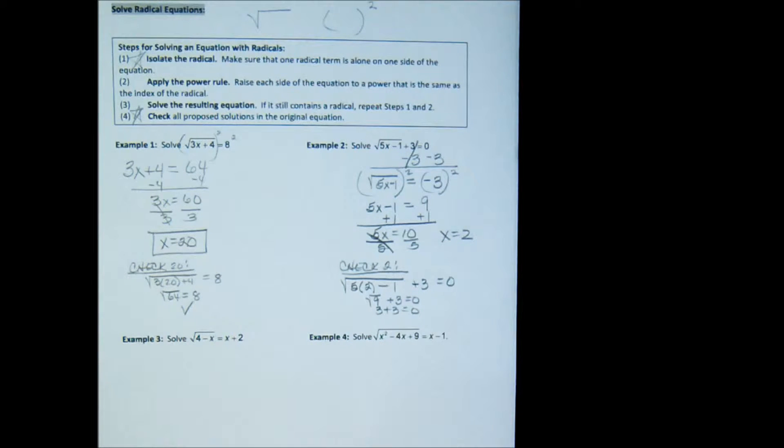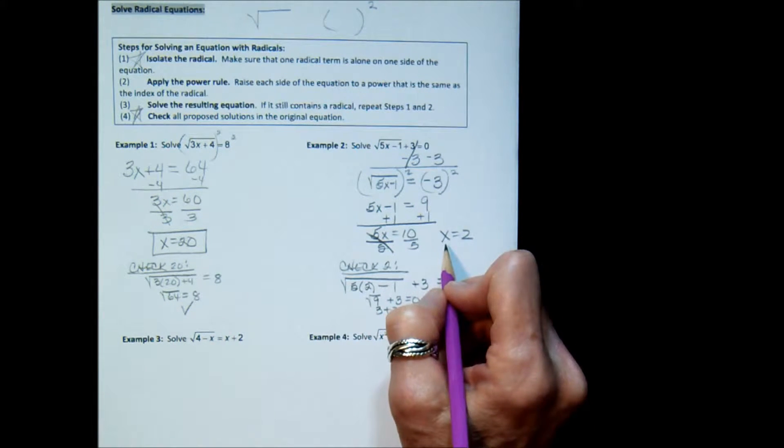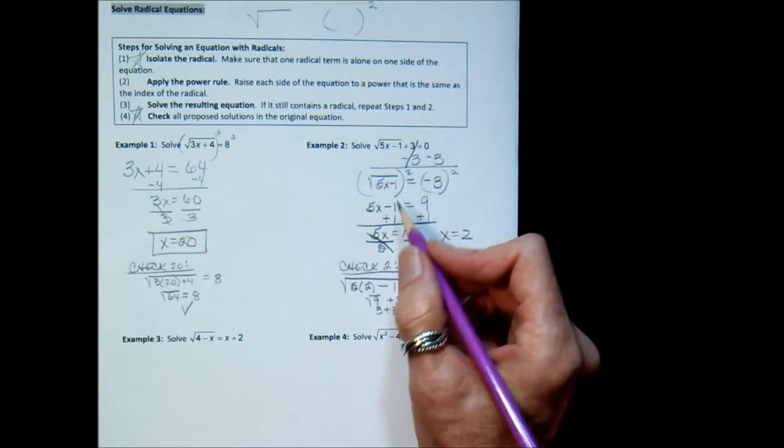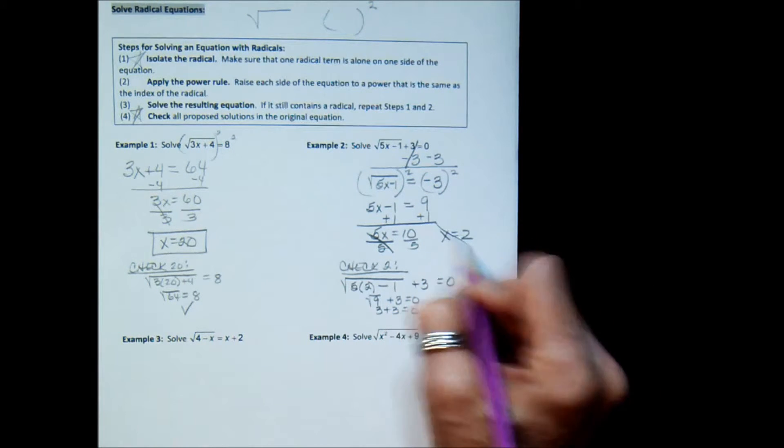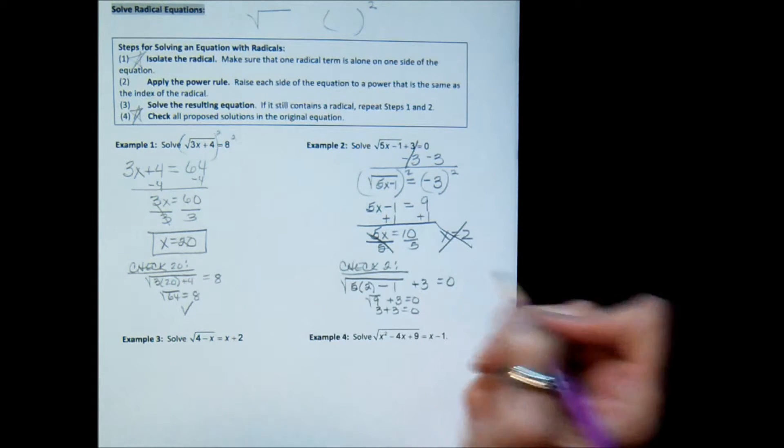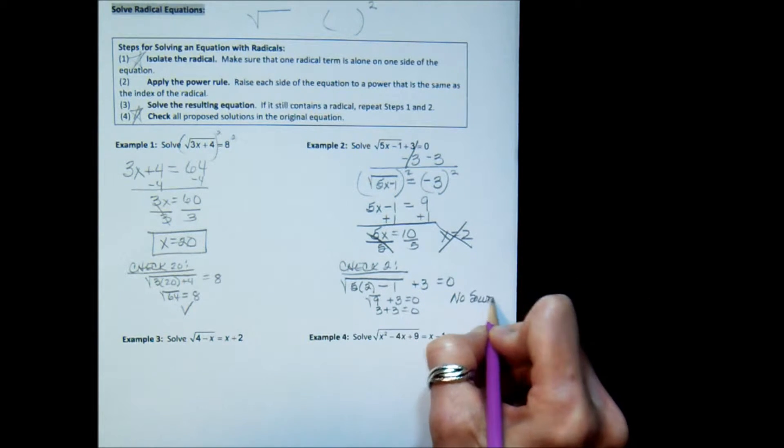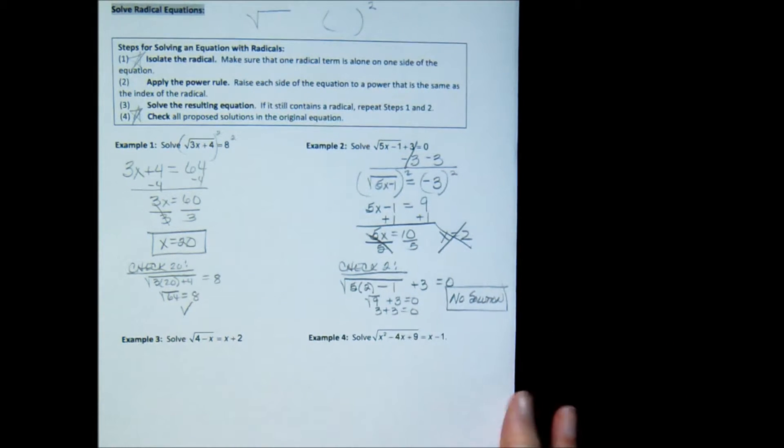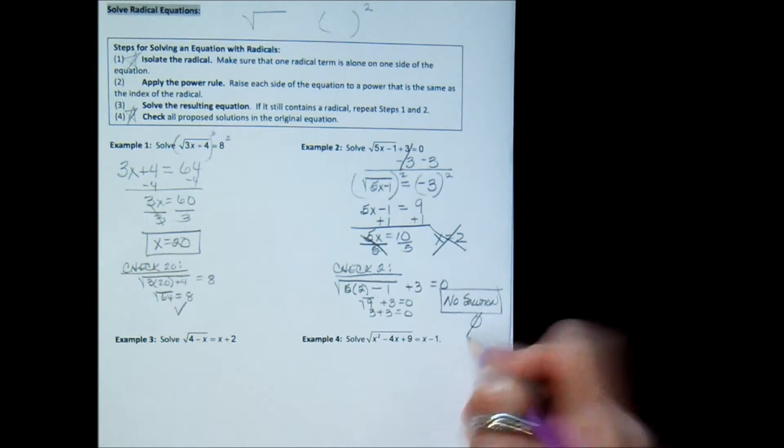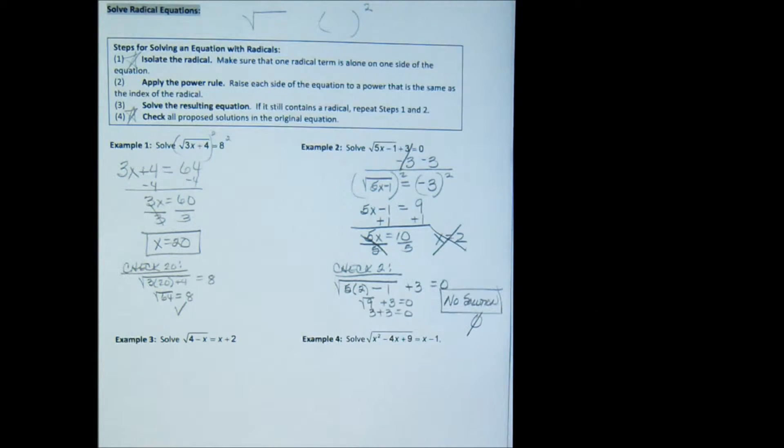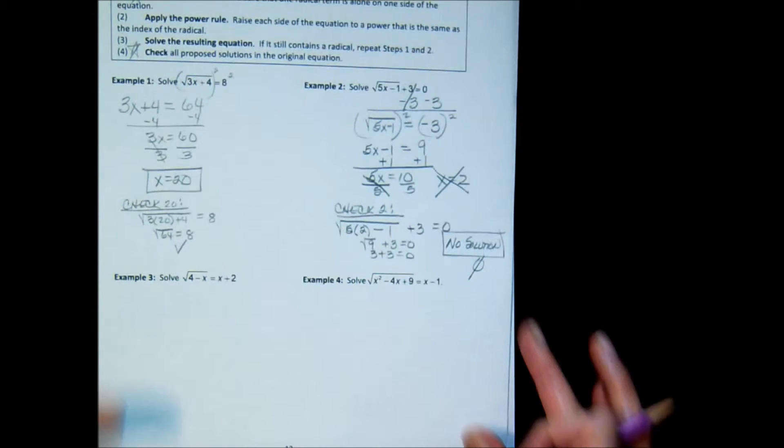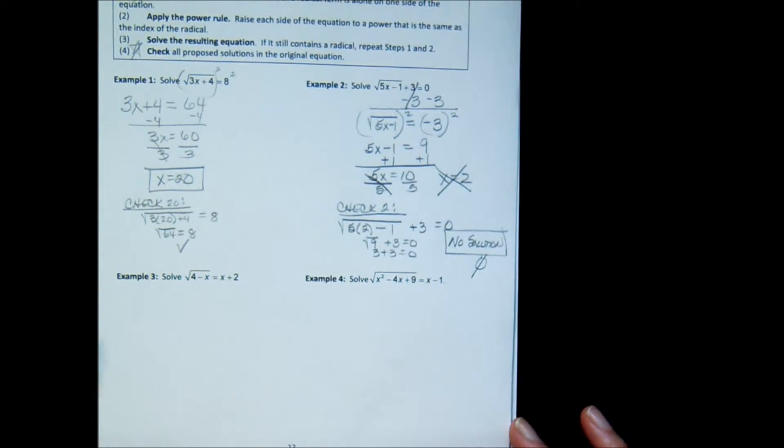No it's not. So our solution, even though we did the algebra correctly, the solution doesn't work. So the answer to this problem is no solution or the empty set. There is no solution to that problem. That doesn't mean zero. It means no solution. So that can happen when you square or raise to a third power. When you raise both sides of an equation to a power, you can get something that doesn't work.